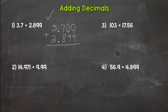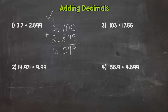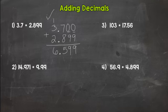Now we just add: 0 plus 9 is 9. 0 plus 9 is 9. 7 plus 8 is 15. 1 plus 3 is 4, plus 2 is 6. Now we need to place the decimal in the answer. You can either do it as you go through the problem — which I'll do in number 2 — or you can do it at the end. I personally like to do it as I go to make sure I don't forget it. You place the decimal by bringing it straight down. So it would go between the 6 and 5, and our final answer would be 6 and 599 thousandths.